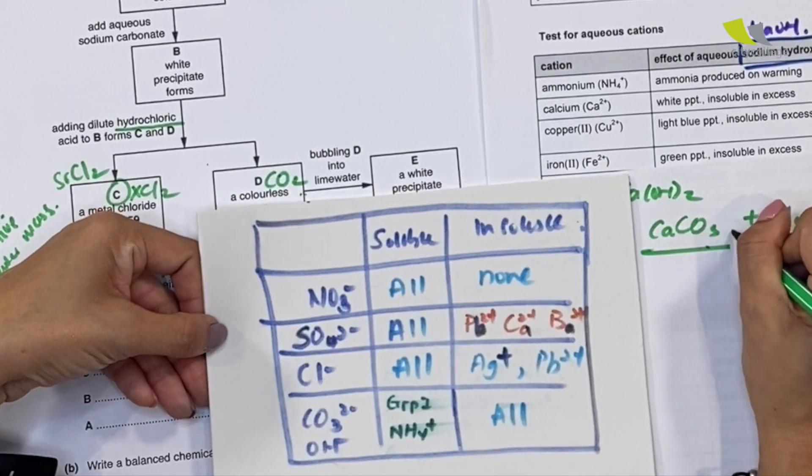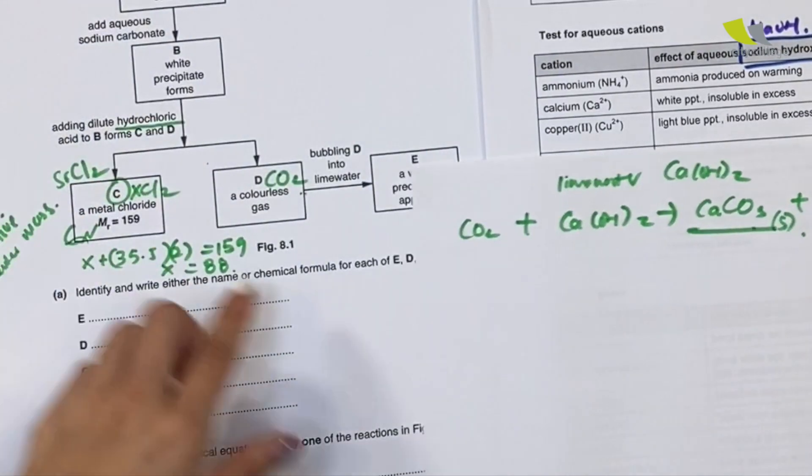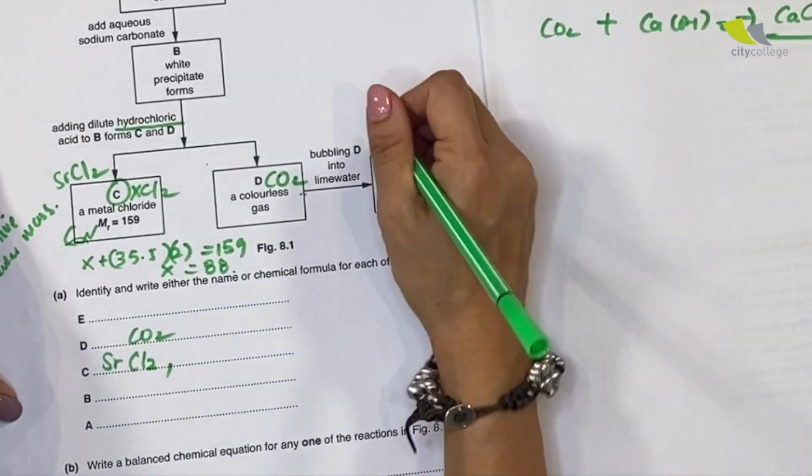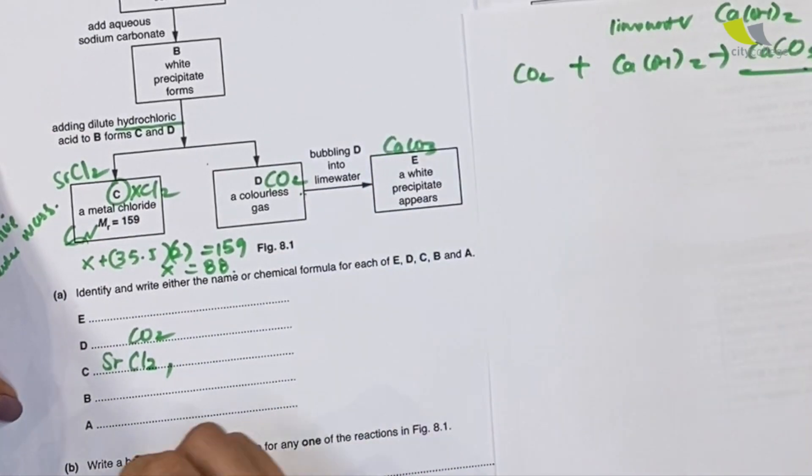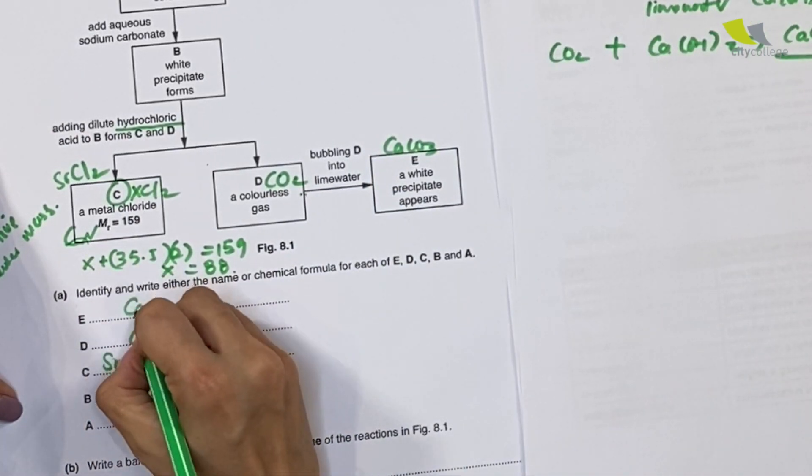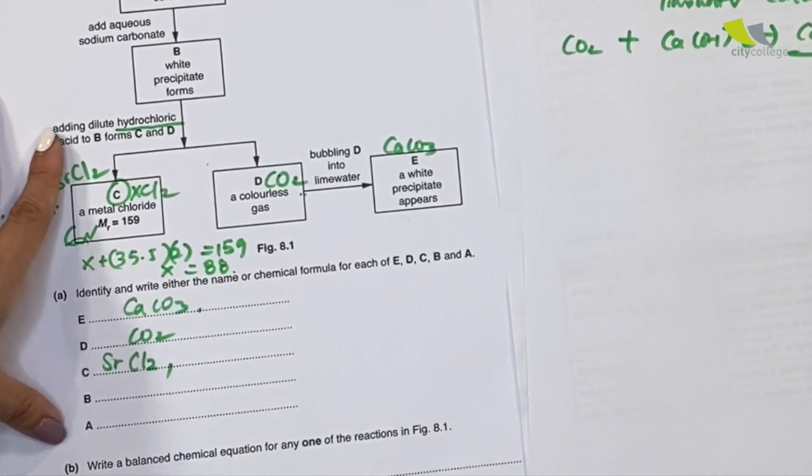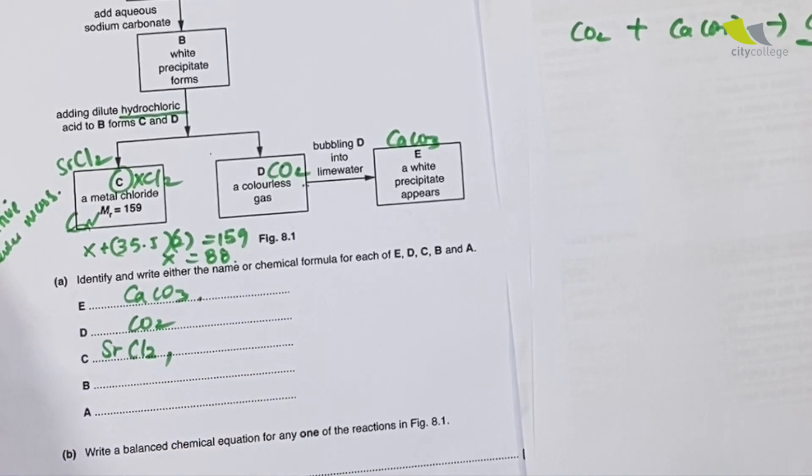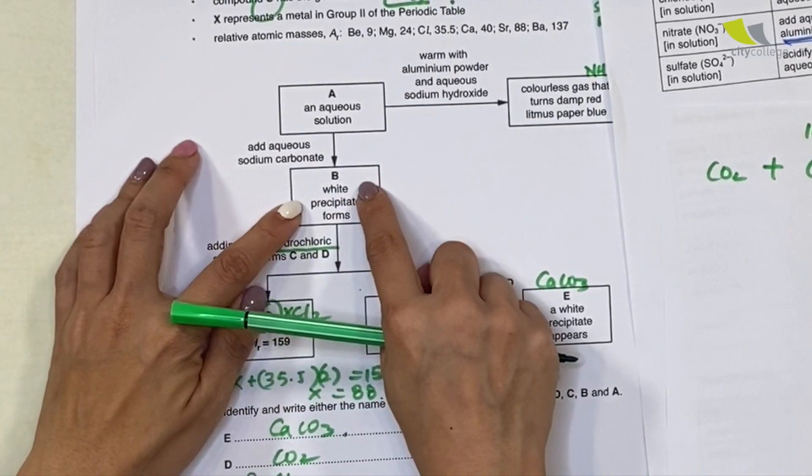This is the balanced chemical equation. With this in mind, I will know who is my white precipitate. Carbonate, unless you're Group 1, you're soluble; others are insoluble. So this is solid. Immediately I know that this E here is my calcium carbonate. So I write CaCO3.